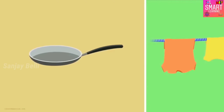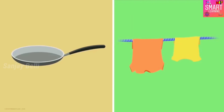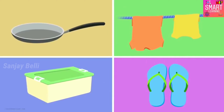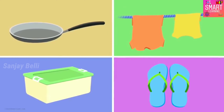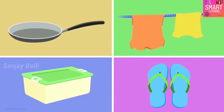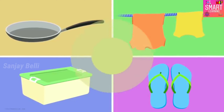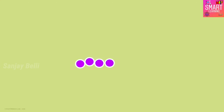Can you tell me what is common between a frying pan, a rope to hang your clothes, an airtight container, and a pair of slippers? Apart from the fact that they are already useful in everyday life, another common thing is that they are made up of long chains of repeating units. In simple words, they are made up of polymers.